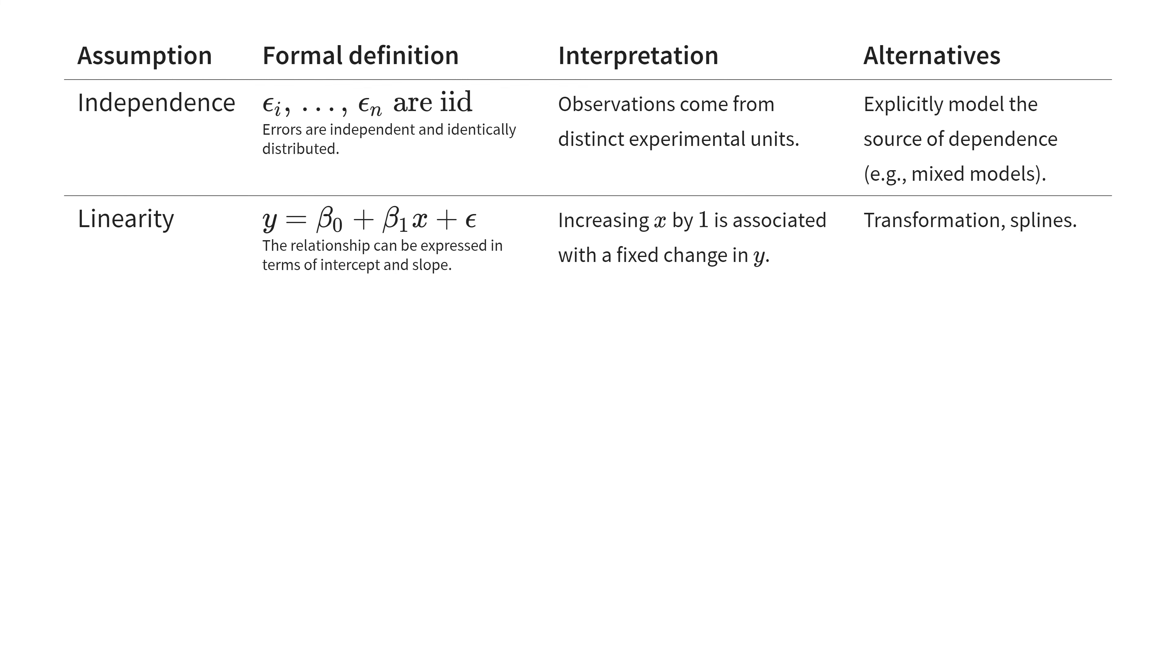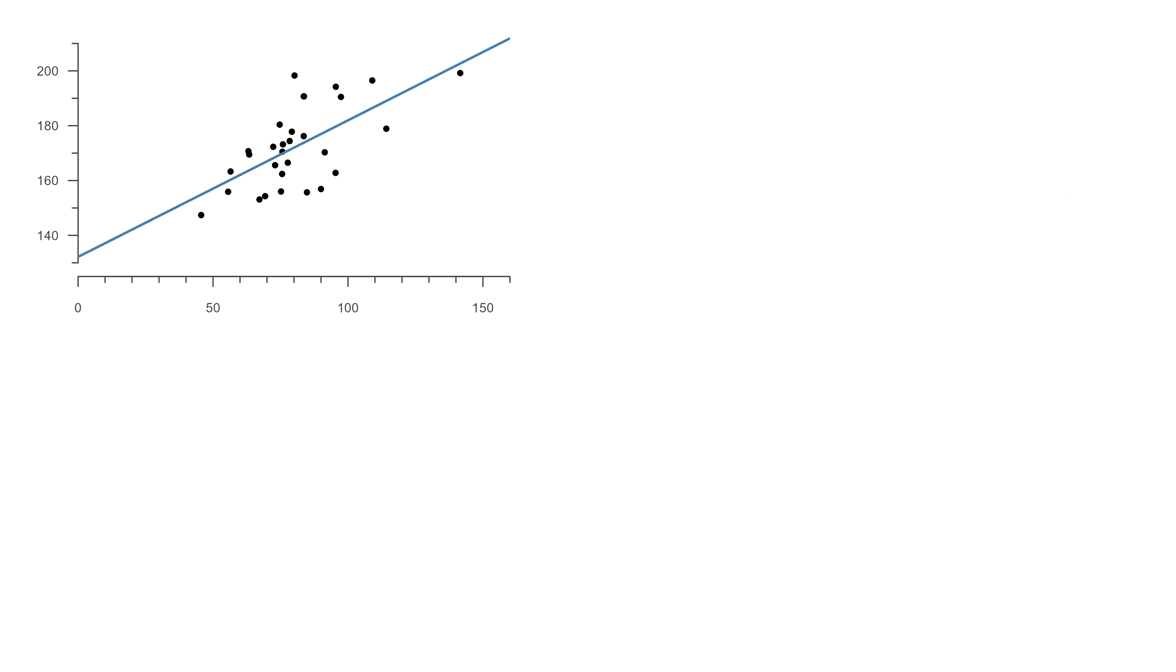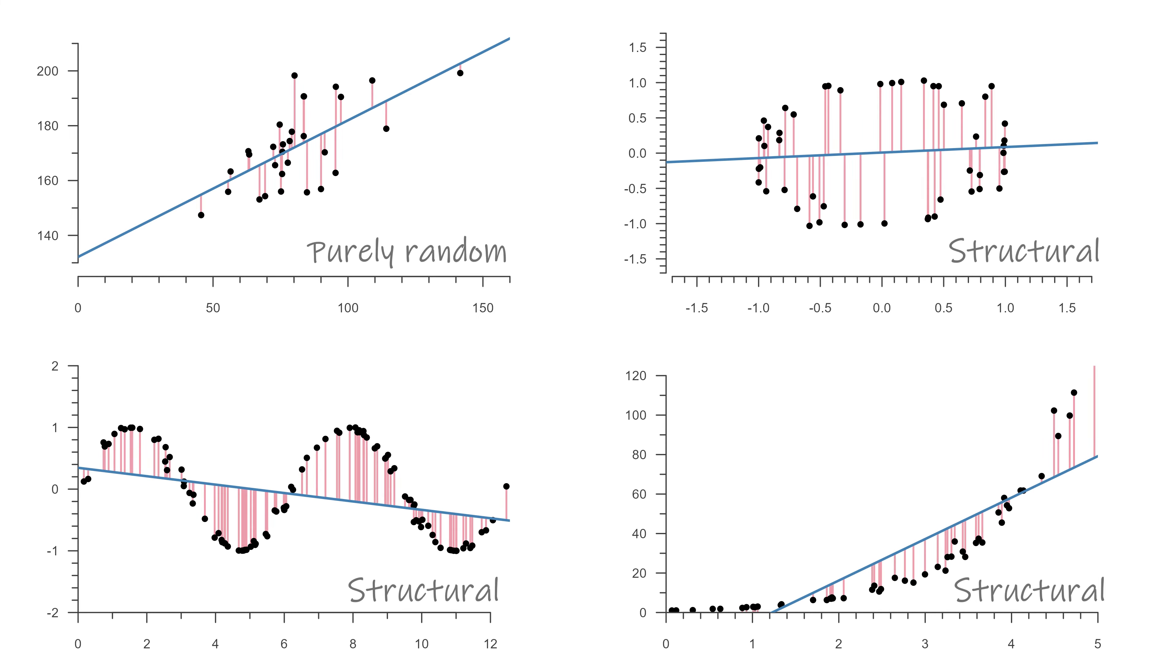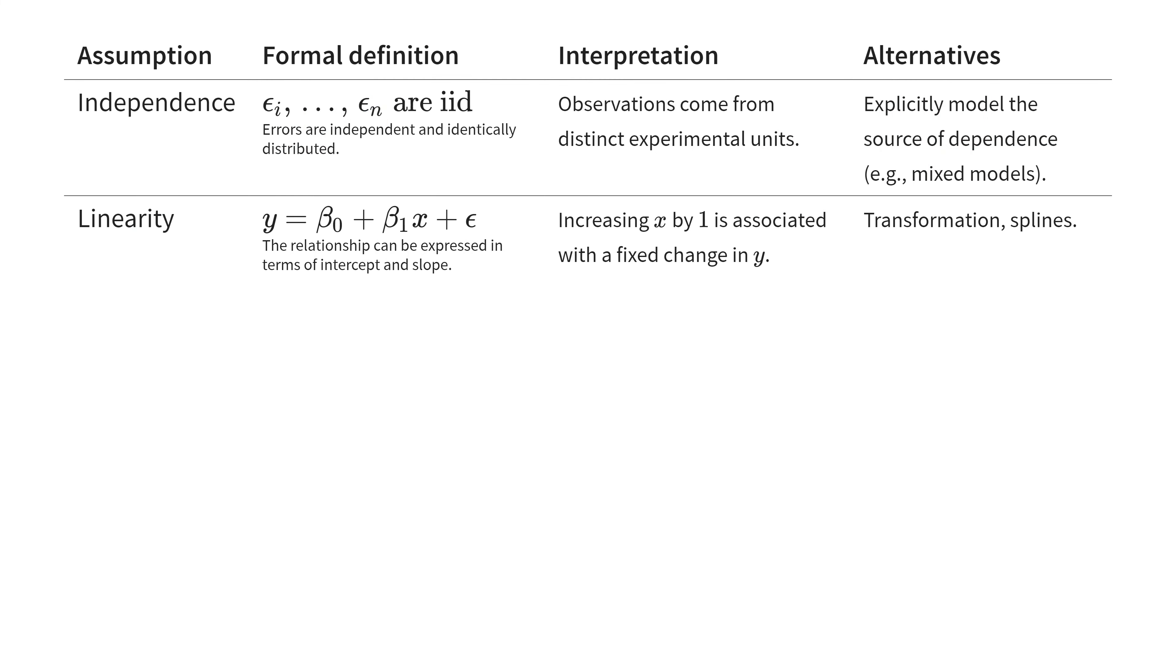The second assumption, linearity, means that the relationship between the outcome and the explanatory variable can be reasonably approximated as linear, at least within the range of the data. If this is not the case, then there is still a structural relationship between the errors we make and the explanatory variable, and that invalidates conclusions we make about this estimated relationship. Another way to think about linearity is that a change in the explanatory variable is associated with a constant average change in the outcome, regardless of where we are.